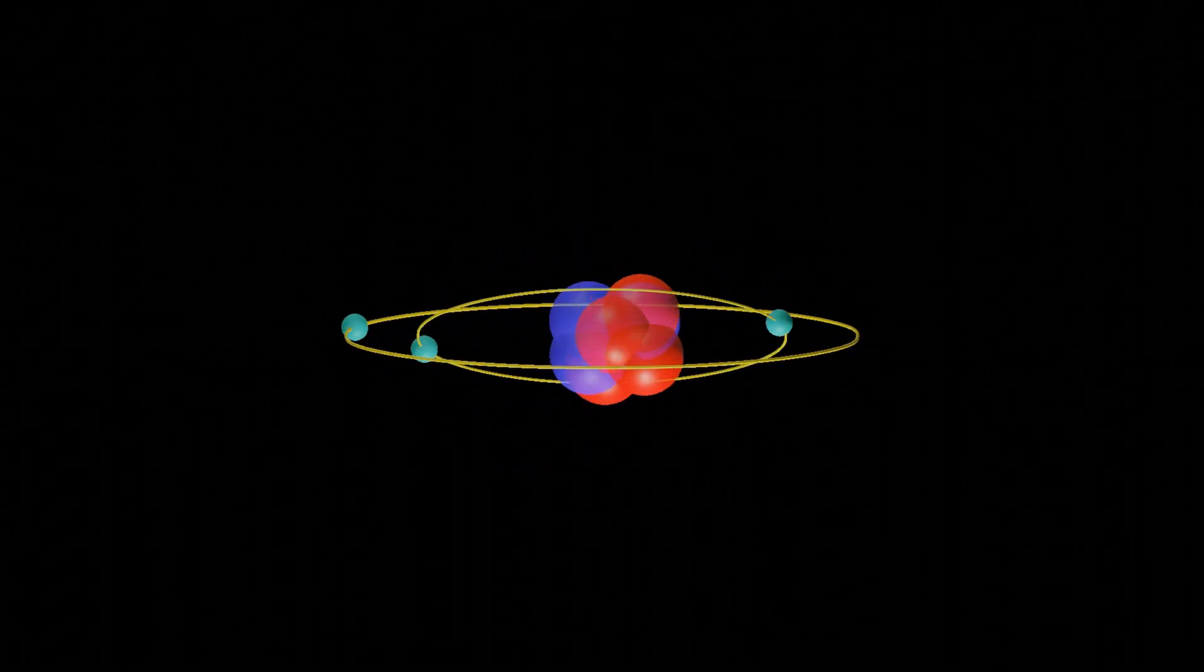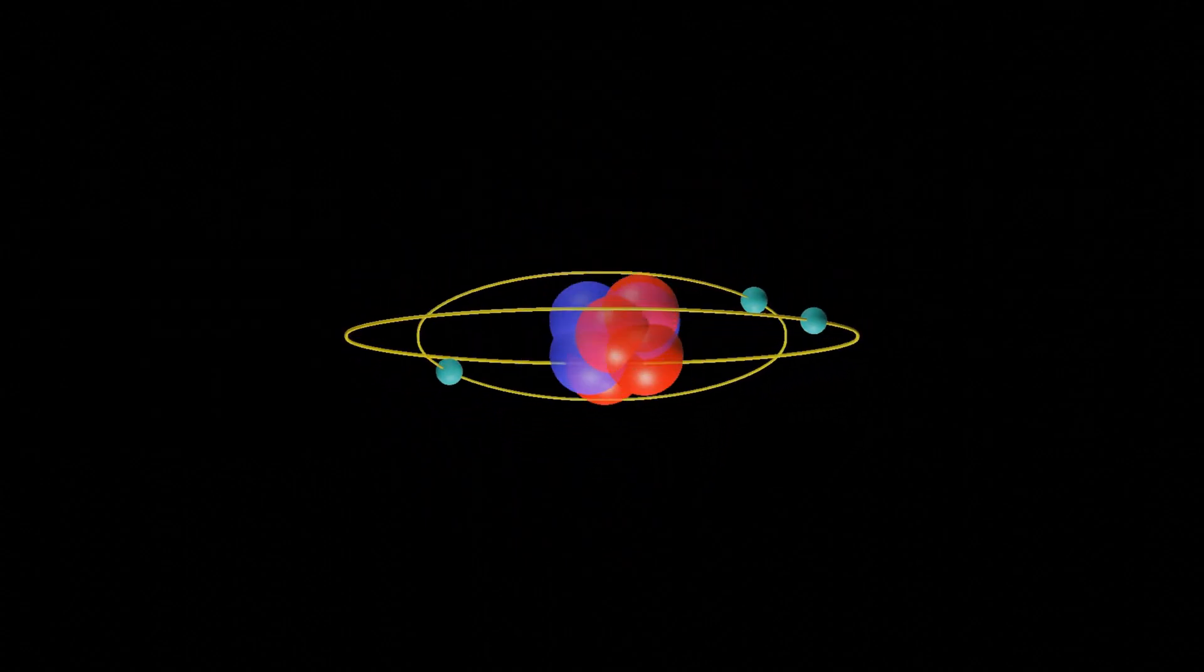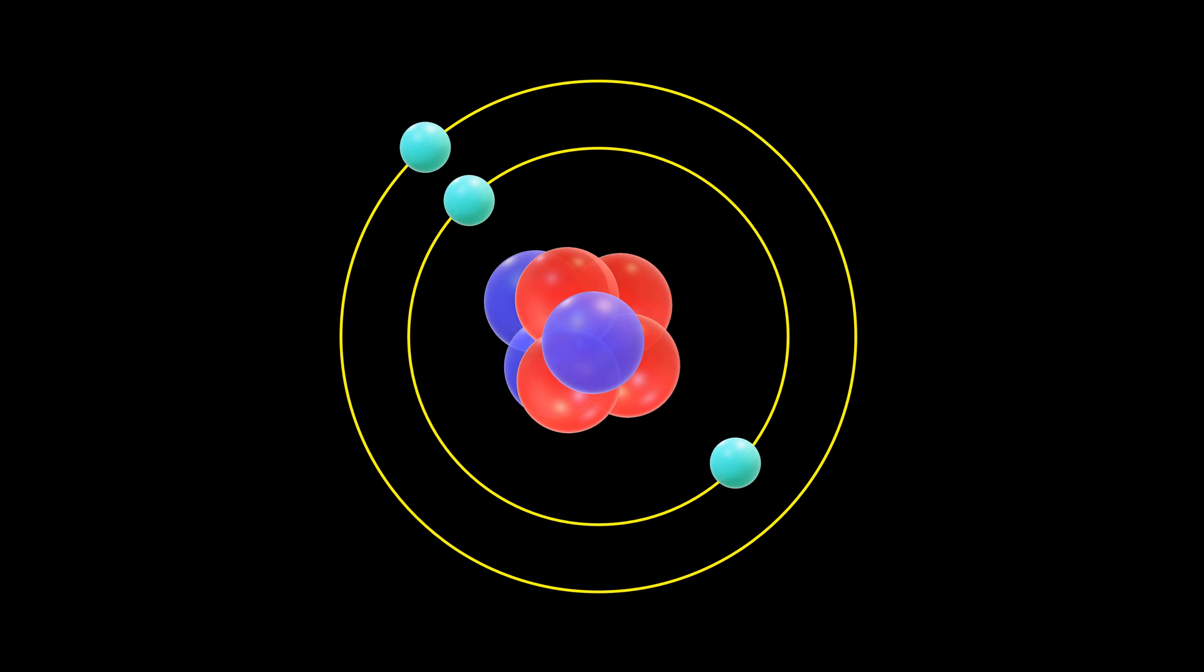In terms of electron configuration, lithium has a single valence electron in the outermost shell. This makes it a highly reactive element, as it tends to form chemical bonds easily by donating or accepting electrons. It is also a good conductor of electricity and heat.